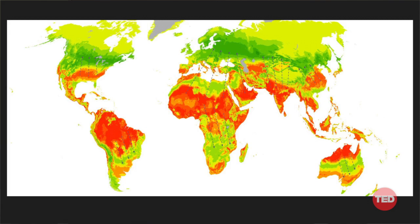Red doesn't mean you cannot live there, but it means it's becoming decreasingly suitable for human life. Green means that relative to how it used to be, it's becoming more suitable. This is the greatest irony in the entire world today — I can think of no more profound paradox that we've ever encountered.